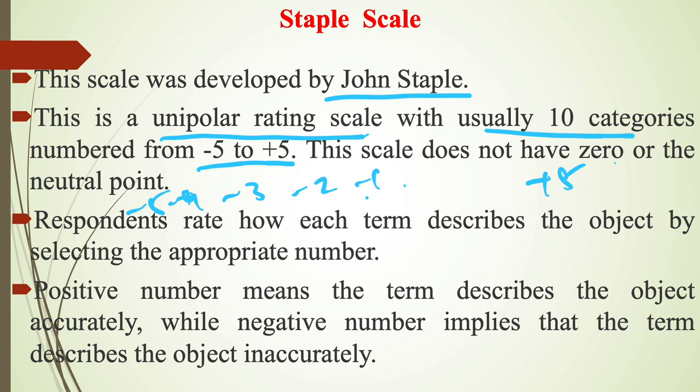This scale does not have zero or the neutral point. So after minus 1 we have to start at plus 1, then plus 2, then plus 3, then plus 4, plus 5. So these are 5 points and these are 5 points, total of 10 categories from minus 5 to plus 5 without zero.